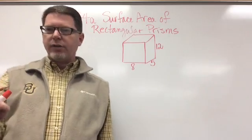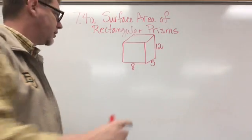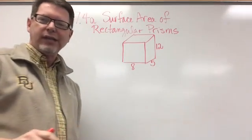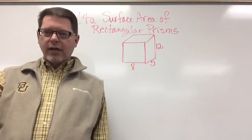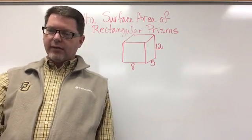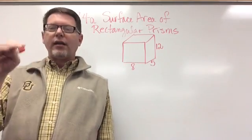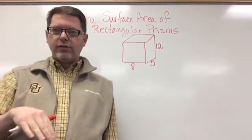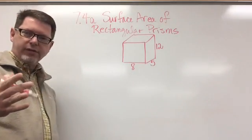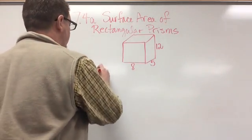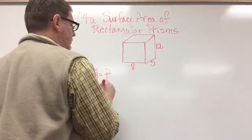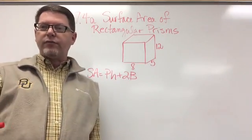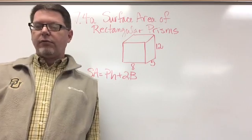So here I have a rectangular prism. The dimensions are 8 inches by 5 inches by 12 inches, and I want to find both the lateral area and the surface area. Remember, surface area is everything, and lateral is just the sides — it doesn't include the two bases. So let's start with the surface area: SA equals capital P times H plus 2B. That formula will be on your formula chart.